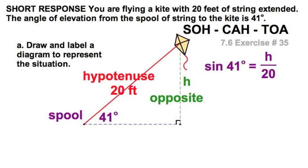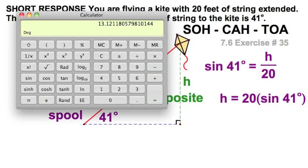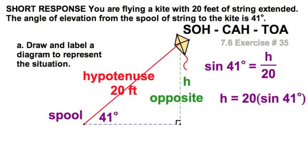The sine of 41 is h over 20. And we're going to rearrange this. 20 times the sine of 41. And let's see. Pull up our calculator. We'll say 41 sine. That's the sine of 41. That looks good. Times 20. 13.1211. You can read all those digits. But we are flying a kite after all. We'll go to the nearest whole foot. So we're looking at about 13 feet.